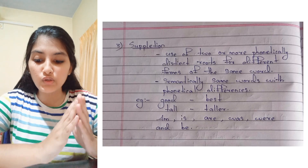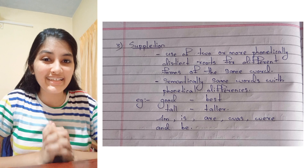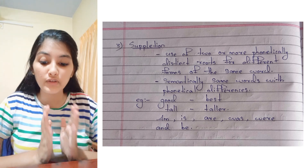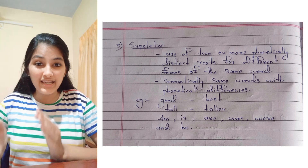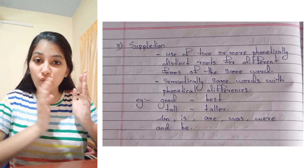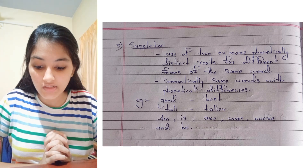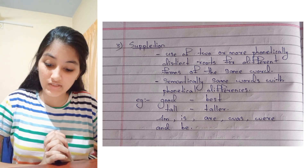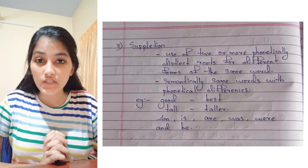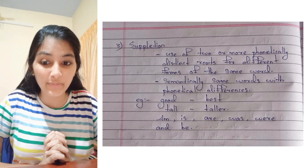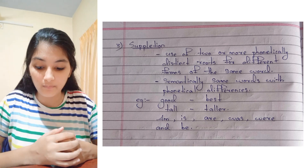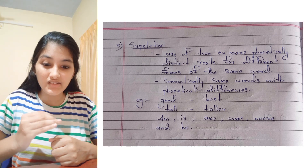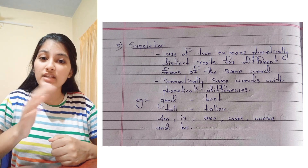The third is suppletion — the use of two or more phonetically distinct roots for different forms of the same word. In other words, semantically related words with phonetic differences. Examples: good–best, tall–taller. The paradigm for the verb 'be' in English is also characterized by suppletion: am, are, is, was, were, and be.